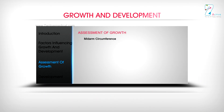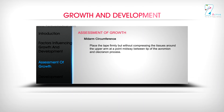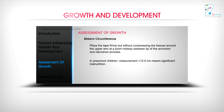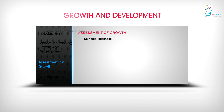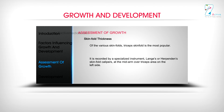Mid-arm circumference: Place the tape firmly but without compressing the tissues around the upper arm at a point midway between the tip of the acromion and olecranon process. In pre-school children, a measurement less than 12.5 cm means significant malnutrition. Skin fold thickness: Of the various skin folds, the triceps skin fold is the most popular. It is recorded by a specialized instrument — Lange or Harpenden skin fold calipers — at the mid-arm over the triceps area on the left side.